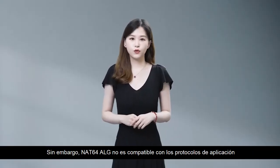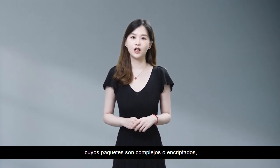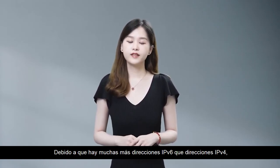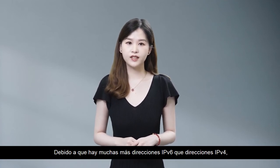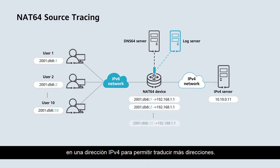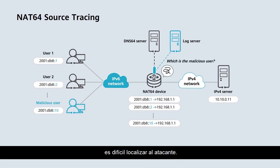However, NAT64 ALG is not compatible with application protocols whose packets are complex or encrypted, such as HTTPS. Because there are many more IPv6 addresses than IPv4 addresses, multiple IPv6 addresses are usually translated into one IPv4 address to allow more addresses to be translated. In this case, if a malicious user uses the post-translated address to initiate an attack, it's difficult to locate the attacker.